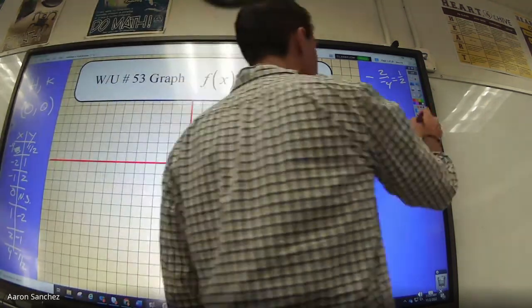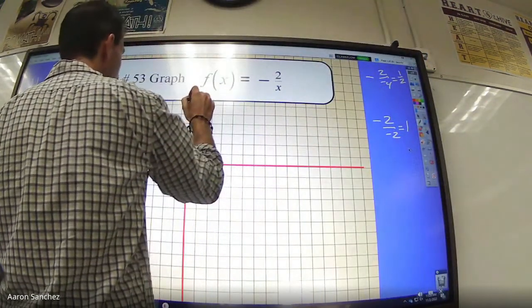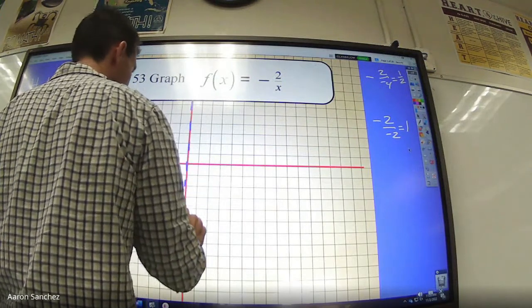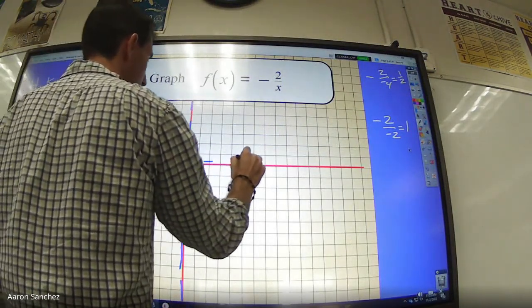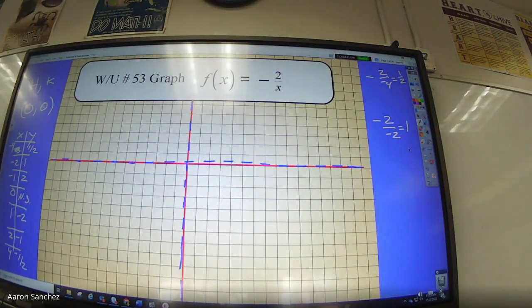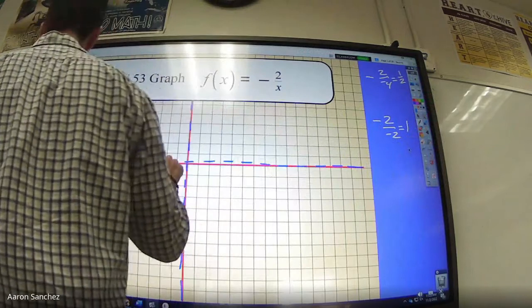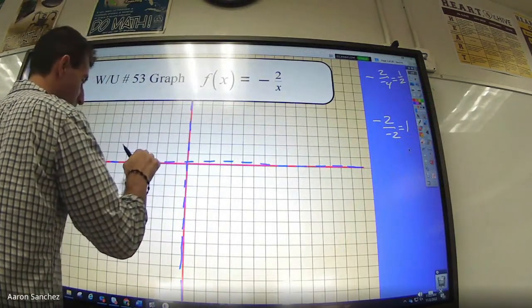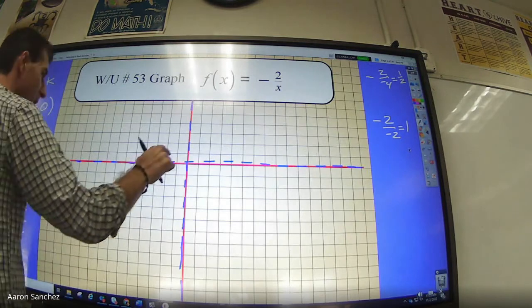So 0, 0 are H and K, so I got my vertical and horizontal asymptotes here. I got negative 4: 1, 2, 3, 4. Negative 1 half, I got right there. I got positive 1 half.